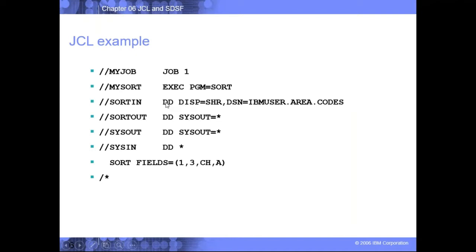If you copy the sort input line and paste it as the sort output line, the file given as input becomes the sorted output file. But in the current example, the system shows the sorted output on the system screen, meaning when you open the original file, the data is still unsorted — because you sorted to the screen display, not back to the file.